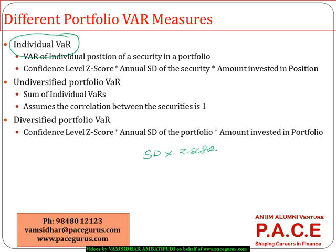So if I am going with a 99% confidence level, which is the 1% VaR calculation, then I will multiply the standard deviation by 2.33 and then multiply it with the amount that is being invested in the security. That is what we mean by the individual security's value at risk.